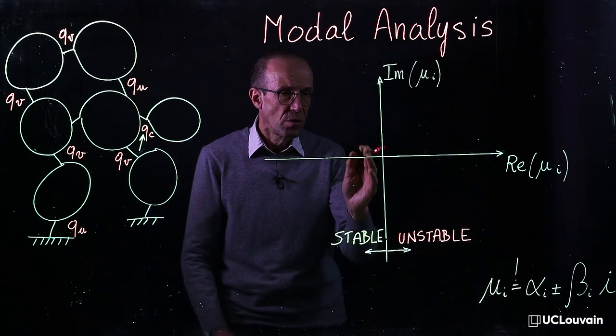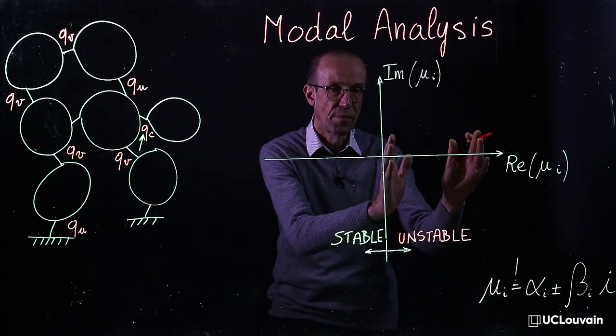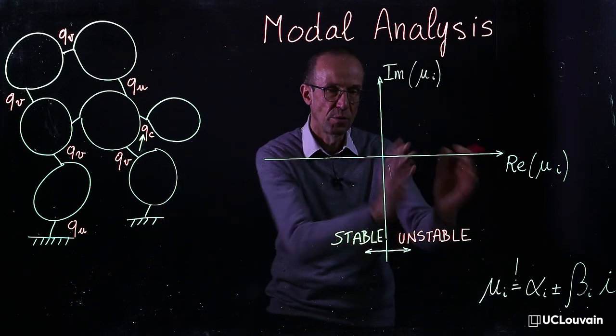The stable modes are on the left, the unstable modes are on the right, respectively, where the real part is negative and where the real part is positive.